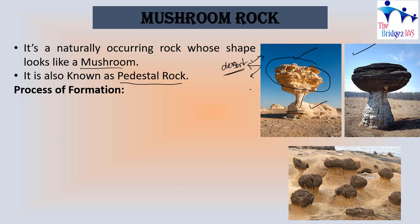It is a very slow process. The formation of mushroom rock is quite simple — whatever weathering happens in the rocks is due to erosion or weathering activity. Since these are formed in arid and semi-arid regions, the strongest agent of weathering is wind. So the agent of formation of mushroom rocks is wind.